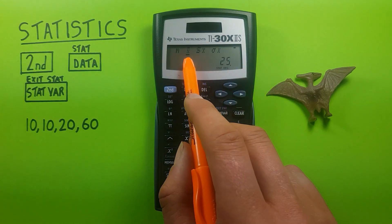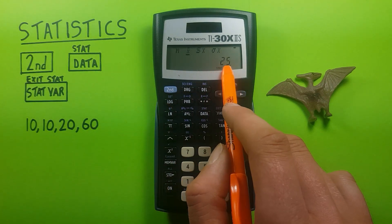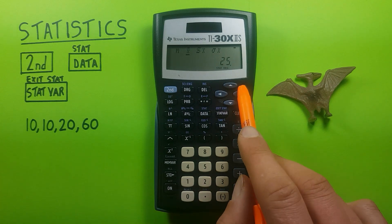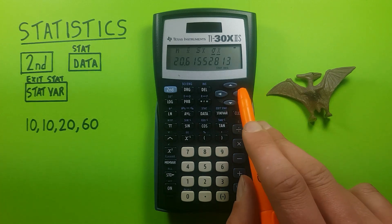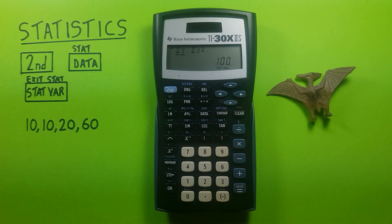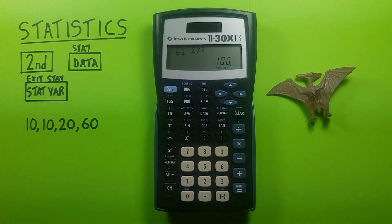Next one over is the mean. So that's the mean of all our variables, or pieces of data. For this one, it's 25. Next we have our sample standard deviation with the large sigma x, and then the population standard deviation with the small sigma x, and then the sum of all of our variables.